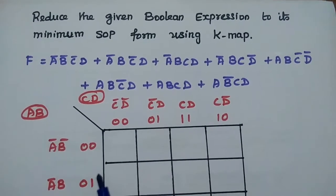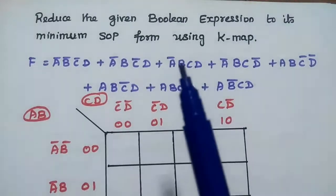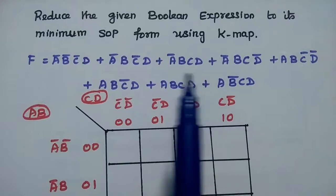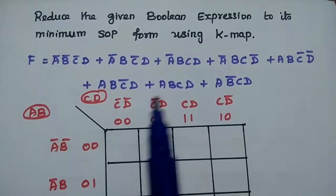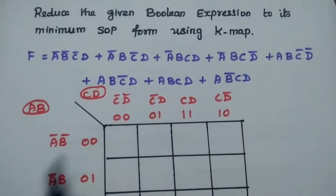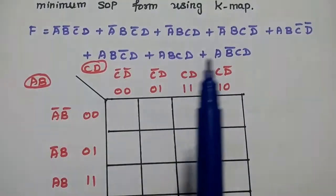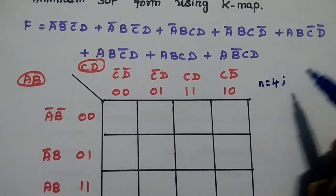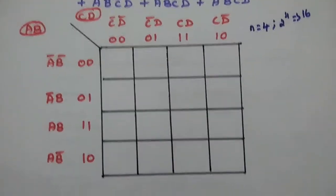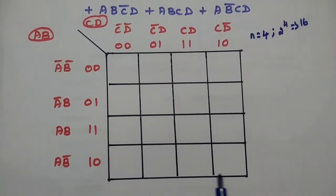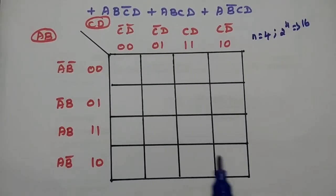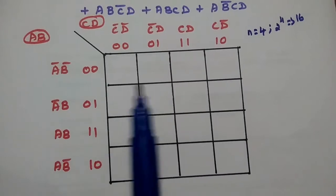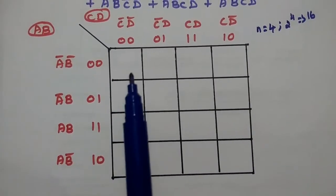The next problem is to reduce the given Boolean expression to its minimum SOP form using KMAP. The given expression uses sum of product terms — minterms — and is a lengthy, complex Boolean expression with 4 variables: A, B, C, and D. For 4 variables, N = 4, so we need 2⁴ = 16 cells. We plot the KMAP taking AB as the row variables and CD as the column variables.